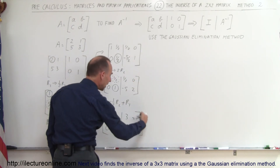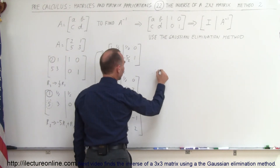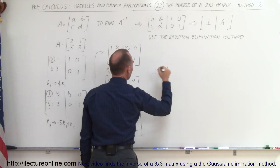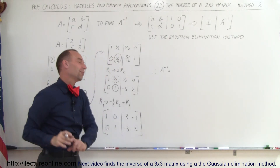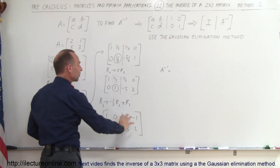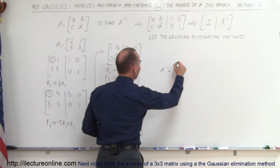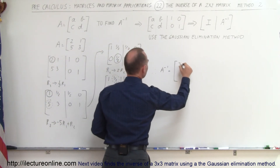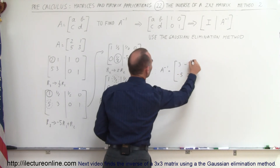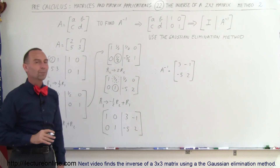Now I have the identity matrix on the left side, which means the right side is the inverse of the matrix. So A inverse is: 3, negative 1, negative 5, and 2. That should be the same result we got in the previous video.